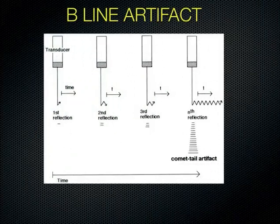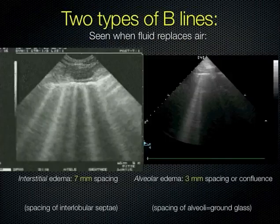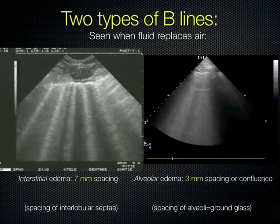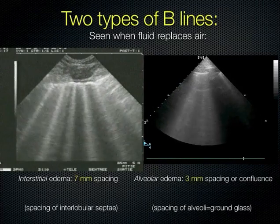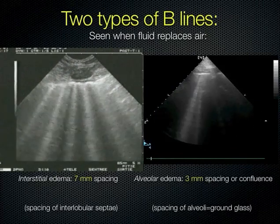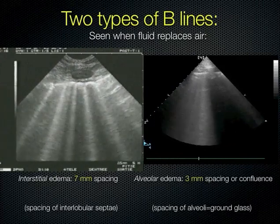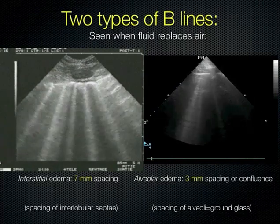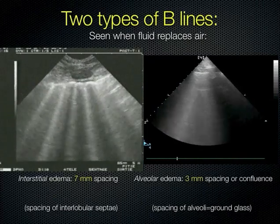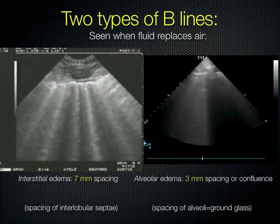You'll see two different types of B-lines. The more gross appearance on the left is interstitial edema — fluid in the interlobular septi but not yet in the alveoli — spaced about 7 millimeters apart at the chest wall. The finer, more diffuse appearance on the right is when you progress from interstitial edema into alveolar edema or ground glass, meaning fluid is actually in the alveoli, which are spaced only about 3 millimeters apart — so you get a more diffuse vertical pattern.